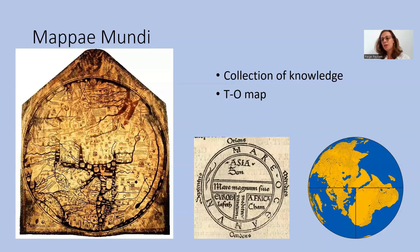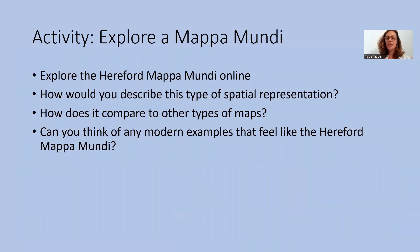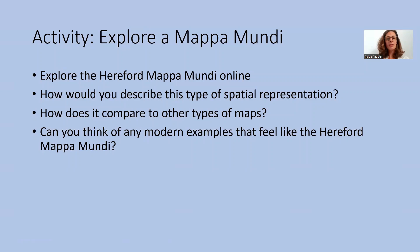One of the activities I'm suggesting today is that you explore the Hereford mappaemundi online. It is really beautifully displayed and has a lot of information about the map itself, the material on it, and the genre of maps more generally. I'd like you to reflect on how you would describe this type of spatial representation. It's not precise in the way that we might think of maps being today, and it's not for navigation like we sometimes think of maps being, but it has its own purposes and I'd like to hear your thoughts on those. I'd also like you to compare it to other types of maps — how is it different or similar? I'm particularly interested if you can think of any modern examples of maps that feel like they have the same purpose as the Hereford mappaemundi — things that might be less about precision and more about a collection of knowledge or a cosmological understanding of the landscape.